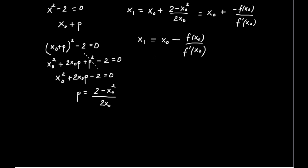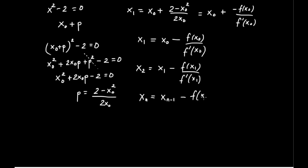Continuing: x2 equals x1 minus f(x1) over f prime(x1), and in general x sub n equals x sub (n minus 1) minus f(x sub (n minus 1)) over f prime(x sub (n minus 1)). This is the modern way of writing Newton's Method. We see it arises algebraically from estimating a correction factor and neglecting higher-order terms — and that neglecting those higher-order terms is exactly what causes derivative expressions to appear.